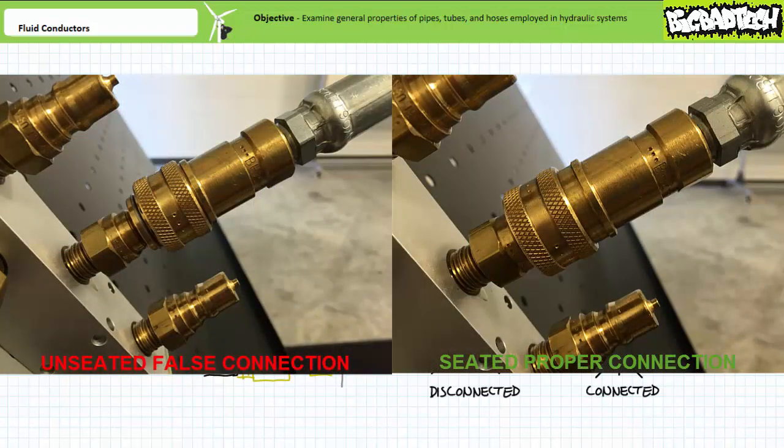A false connection may look solid, but a quick inspection from the side will reveal the exterior sleeve not fully pulled down. Properly seating the connection should allow flow.